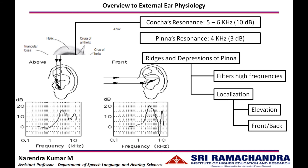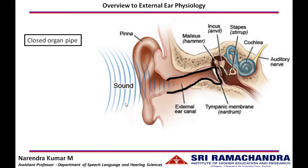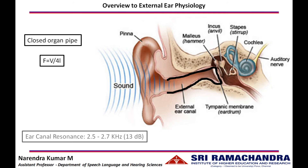Moving on to the functions of the ear canal: the auditory canal acts as a closed organ pipe — open on one side and closed on the other. For a closed organ pipe, the resonant frequency can be calculated using the formula: velocity of sound divided by four times the length of the pipe. Using this calculation, an average ear canal's resonance comes to around 2.5 to 2.7 kilohertz, and the amount of enhancement within this frequency range is 13 decibels.